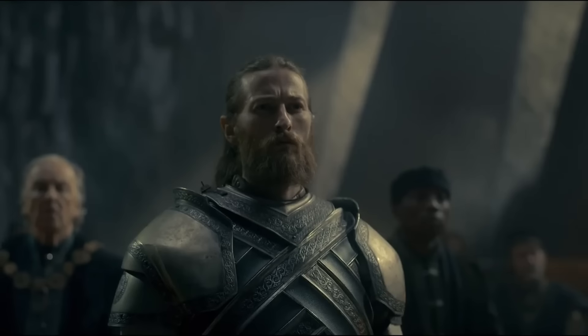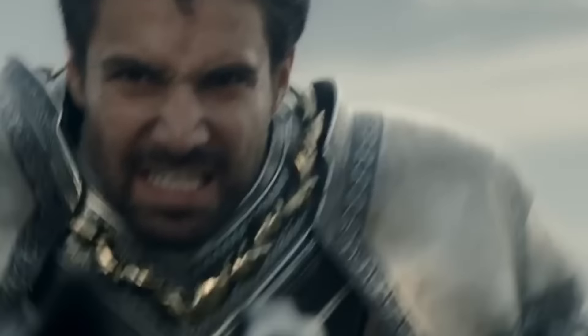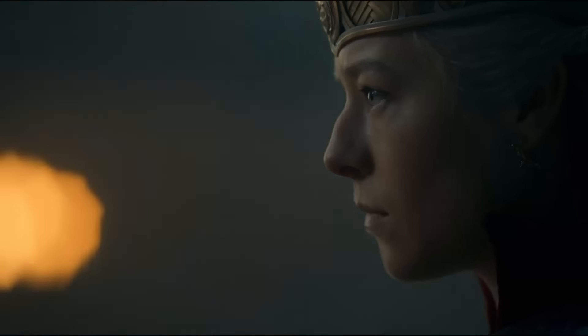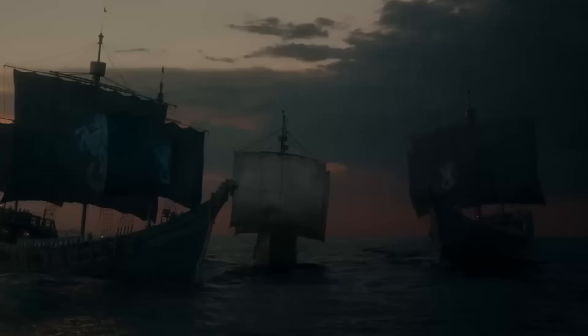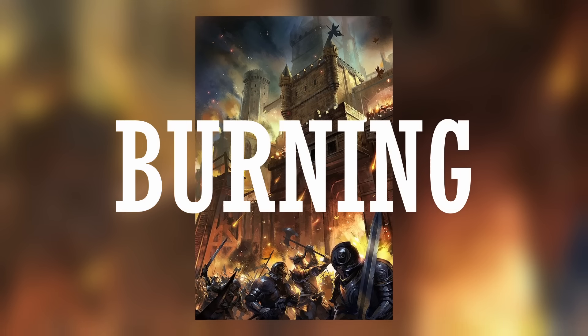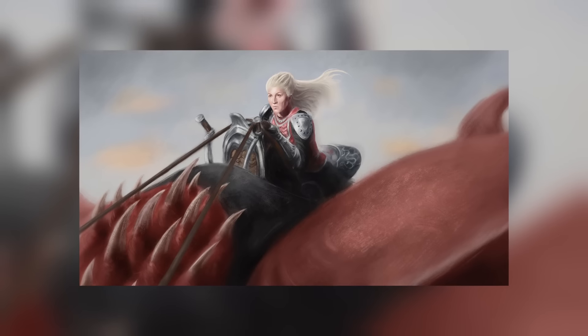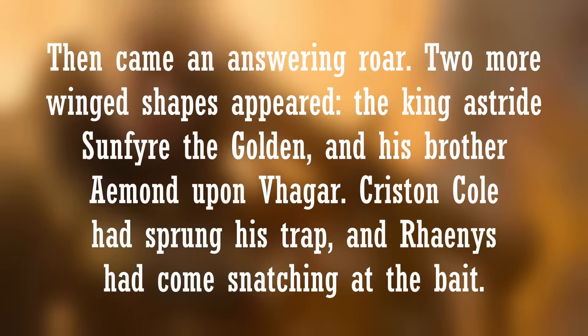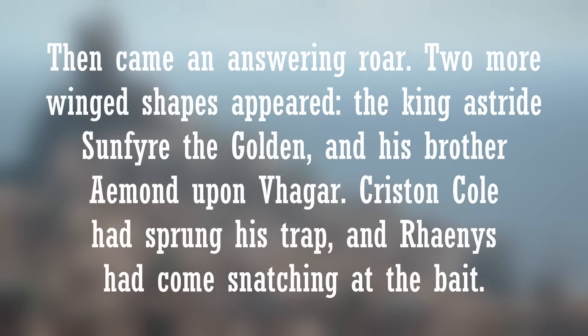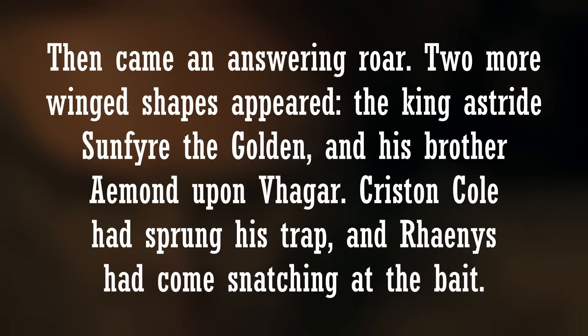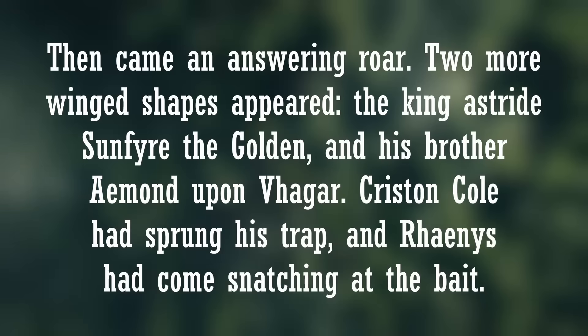The immediate effects are that her lords become concerned about Ser Criston Cole's next strategy, forcing her to respond. Ser Criston, realizing he cannot defeat the Black faction on the sea, starts attacking the castles and strongholds of lords that support Rhaenyra on land — burning surrounding villages, killing the smallfolk, and looting their resources. In response, Rhaenyra sends Rhaenys to deal with this problem, and Rhaenys arrives with her dragon Meleys. However, this is exactly what Ser Criston was hoping for. "Then came an answering roar. Two more winged shapes appeared — the king astride Sunfyre the Golden and his brother Aemond upon Vhagar." Criston Cole had sprung his trap, and Rhaenys had come snatching at the bait.